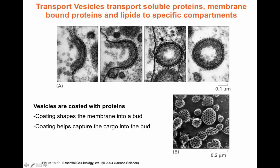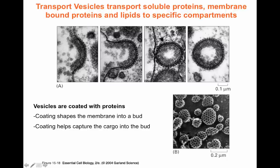Clathrin was originally identified as a protein that forms around vesicles. Clathrin monomers can polymerize and help form a cage structure around the vesicle. Transmission electron micrographs show the formation of an invagination in the membrane, with cargo inside the vesicle and the formation of the actual vesicle. The coating proteins form a cage structure with defined geometry, helping shape the membrane into a bud and capturing the contents — which could be membrane-bound or soluble proteins — inside.